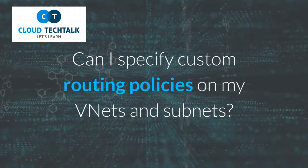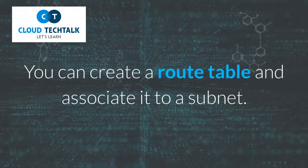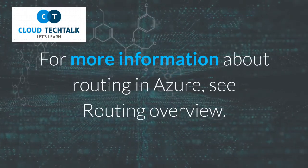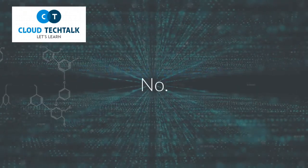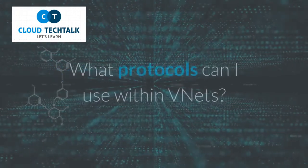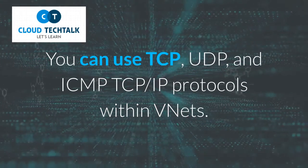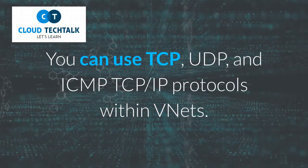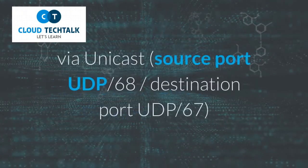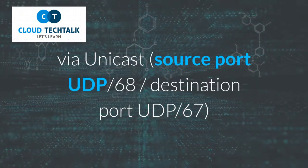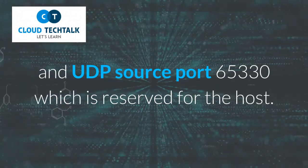Can I specify custom routing policies on my VNets and subnets? Yes — you can create a route table and associate it to a subnet. For more information about routing in Azure, see Routing Overview. Do VNets support multicast or broadcast? No — multicast and broadcast are not supported. What protocols can I use within VNets? You can use TCP, UDP, and ICMP TCP/IP protocols within VNets. Unicast is supported within VNets, with the exception of Dynamic Host Configuration Protocol (DHCP) via Unicast — source port UDP-68, destination port UDP-67 — and UDP source port 65330, which is reserved for the host.